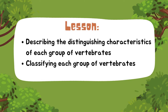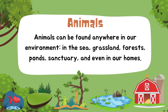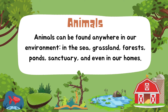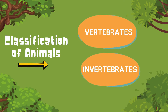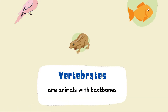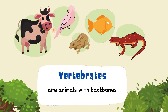Let us start, kids! Animals can be found anywhere in our environment — in the sea, grassland, forests, ponds, sanctuary, and even in our homes. These animals in different ecosystems and habitats are classified into two: the vertebrates and invertebrates. Vertebrates are animals with backbones.